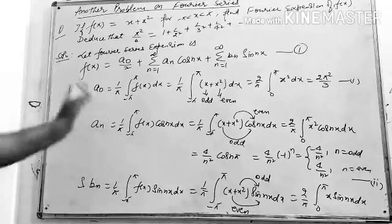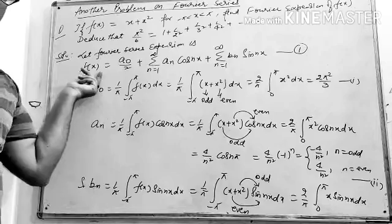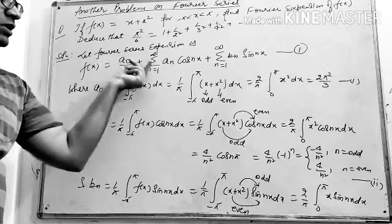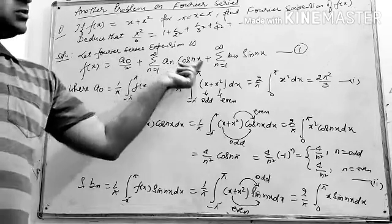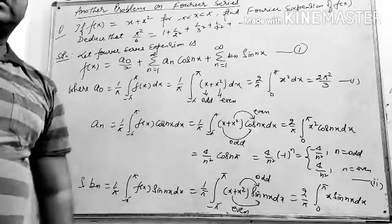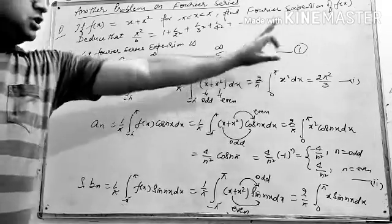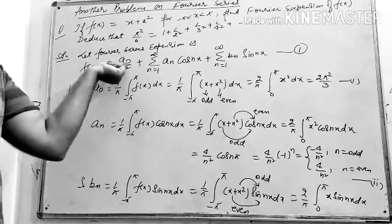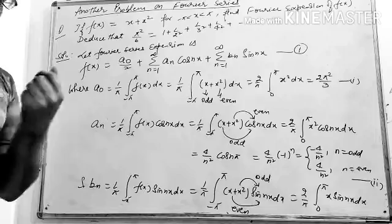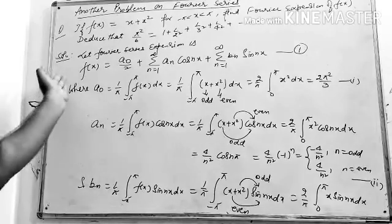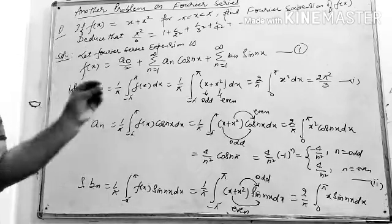As earlier stated, the standard Fourier series expansion formula is f(x) = a₀/2 + Σ(n=1 to ∞) aₙ cos(nx) + Σ(n=1 to ∞) bₙ sin(nx). Let this be equation number 1. The values of a₀, aₙ, and bₙ come from Euler's formula, which was stated in the previous slide.